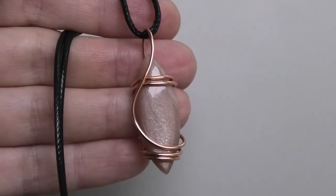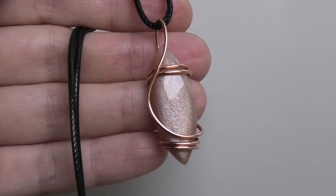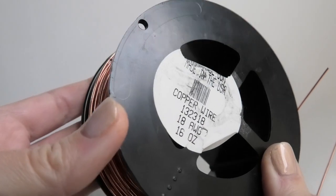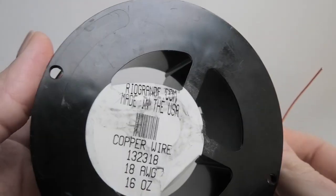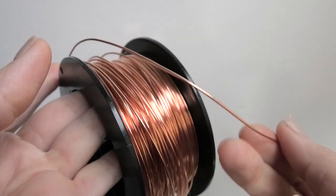Let's go ahead and get started making this pendant. The wire I'm using is just one piece—18 gauge round dead soft copper wire—and I purchased it from Rio Grande.